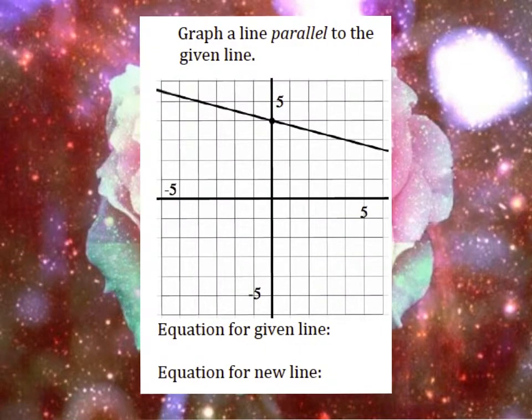Now that we understand how to identify parallel lines and we understand that the slope is the same for parallel lines, we're going to graph a line parallel to the given line. We're going to do step A and step B. Step A is we are going to give the equation for the given line. To do that, we need to know where the y-intercept starts at. And then we also need to calculate our slope. So I'm going to go down 1 and then over 4 to this point right here.